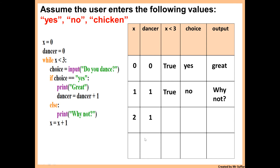So because of that, dancer stays the same. Now 2 is less than 3 — that's true. The next input is 'chicken'. If choice is equal to 'yes' — chicken is not equal to 'yes', so we have to go to the else again. Then we increase x by 1. Now x is 3 — while 3 is less than 3, no, that's false. Because this is false, we break out of the loop and finish the trace table.